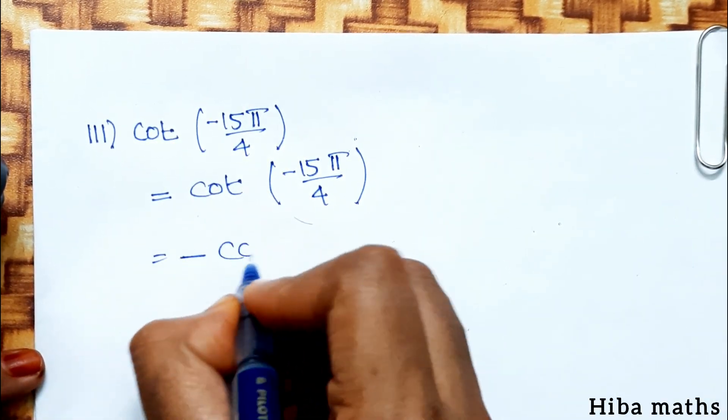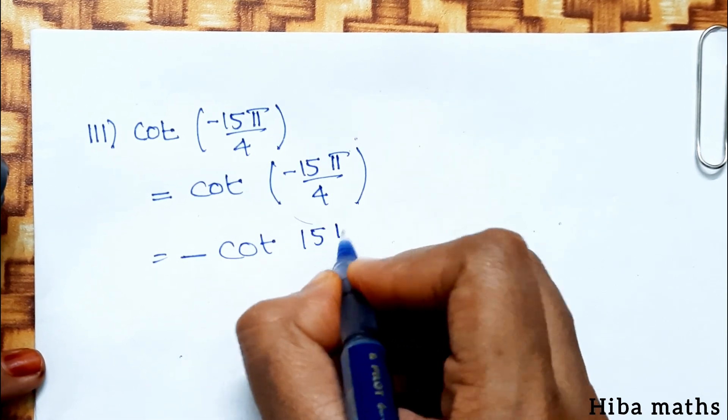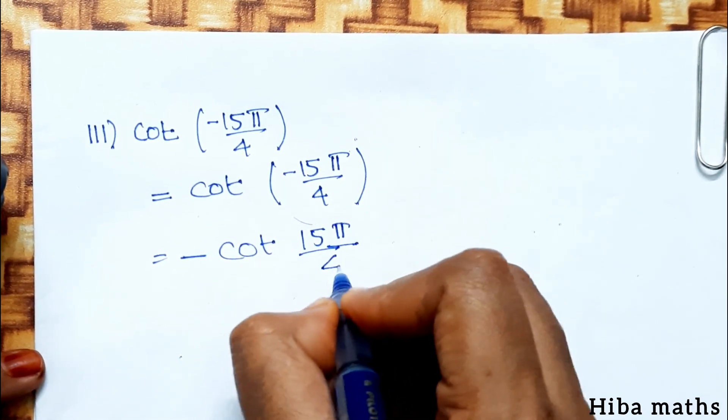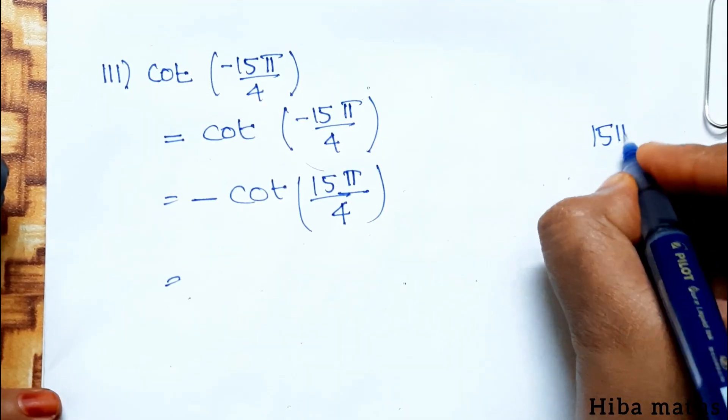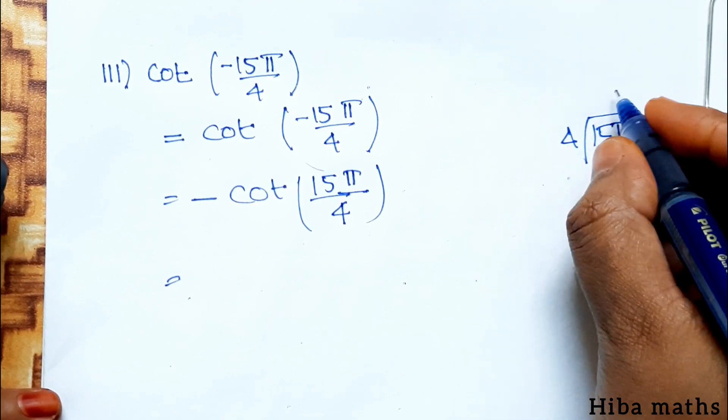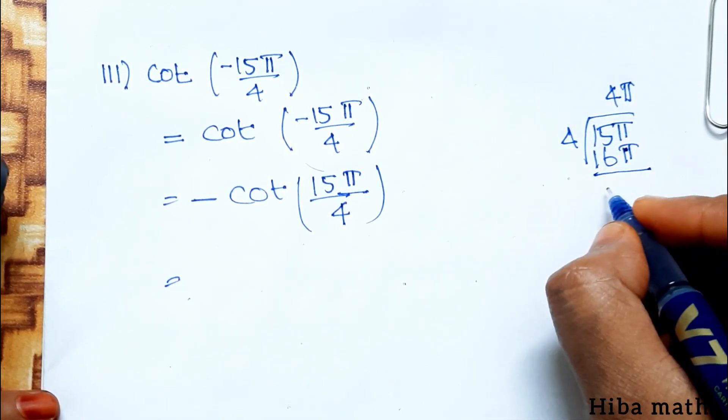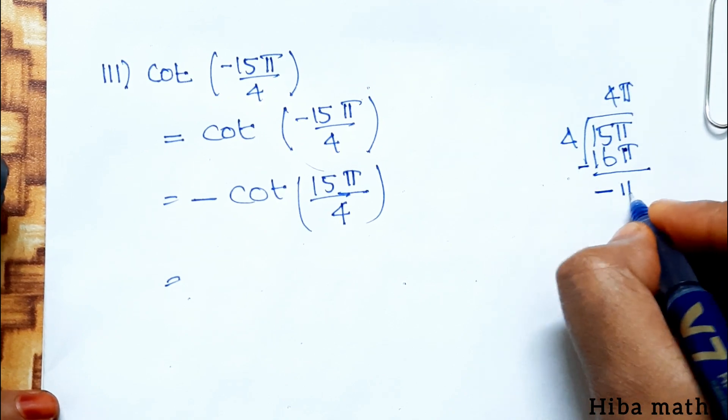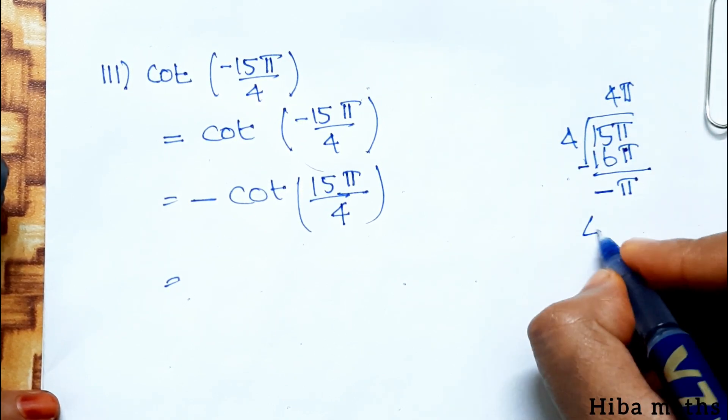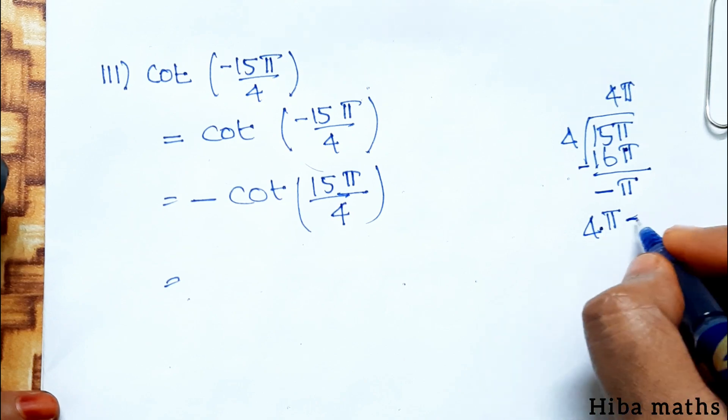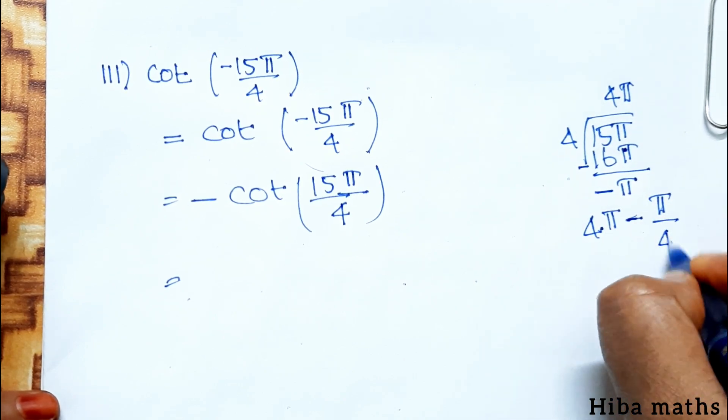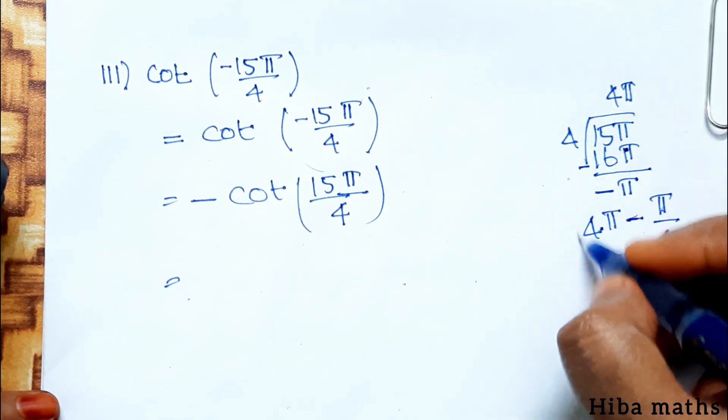We divide 15 pi by 4. This gives us 4 pi minus pi by 4. The quotient is 4 pi and remainder is negative pi by 4.